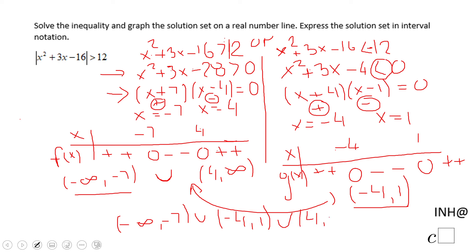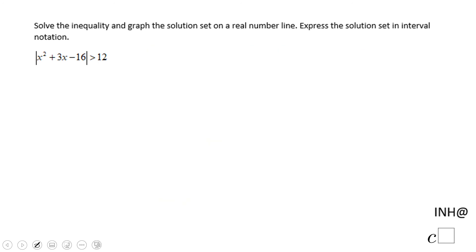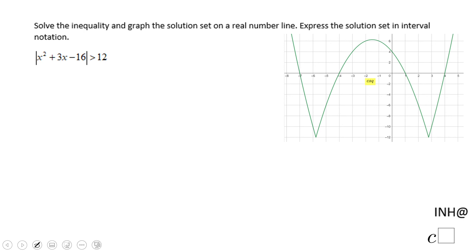Now I'm going to clean this screen, and I want you to take a look at the graphical way. This is the graph of absolute value of x² + 3x - 16 minus 12. You can put this in a graphing calculator. Notice it's over the x-axis here: negative infinity to -7, here -4 to 1, and 4 to infinity. So the graphical way is also a good way, a faster way if you know how to adjust the window.